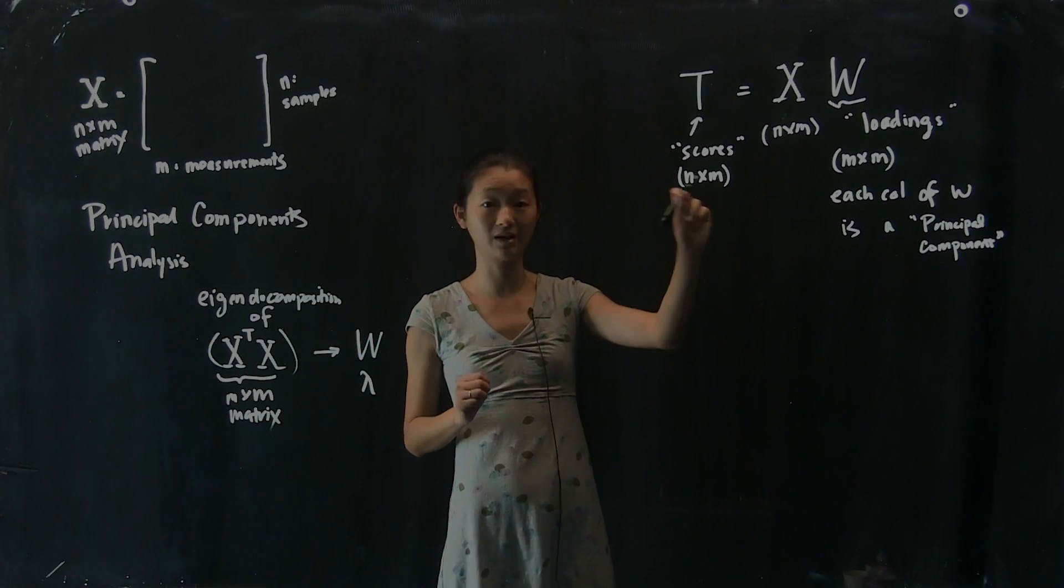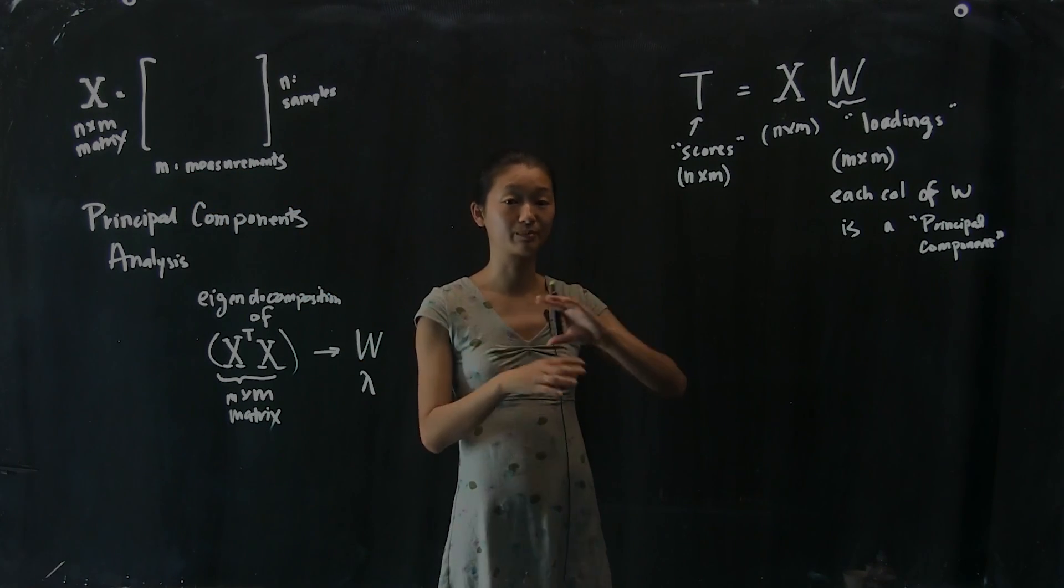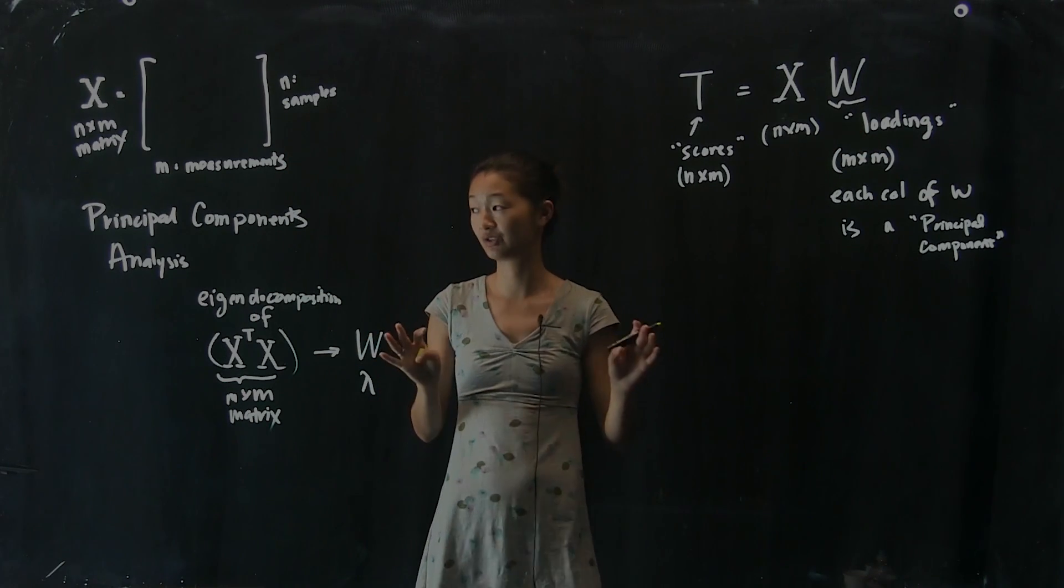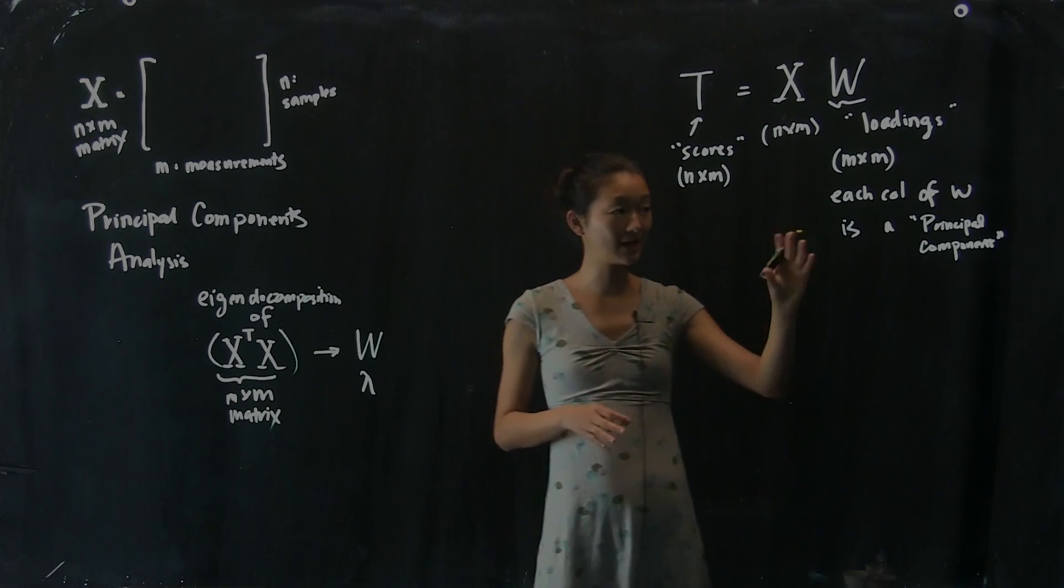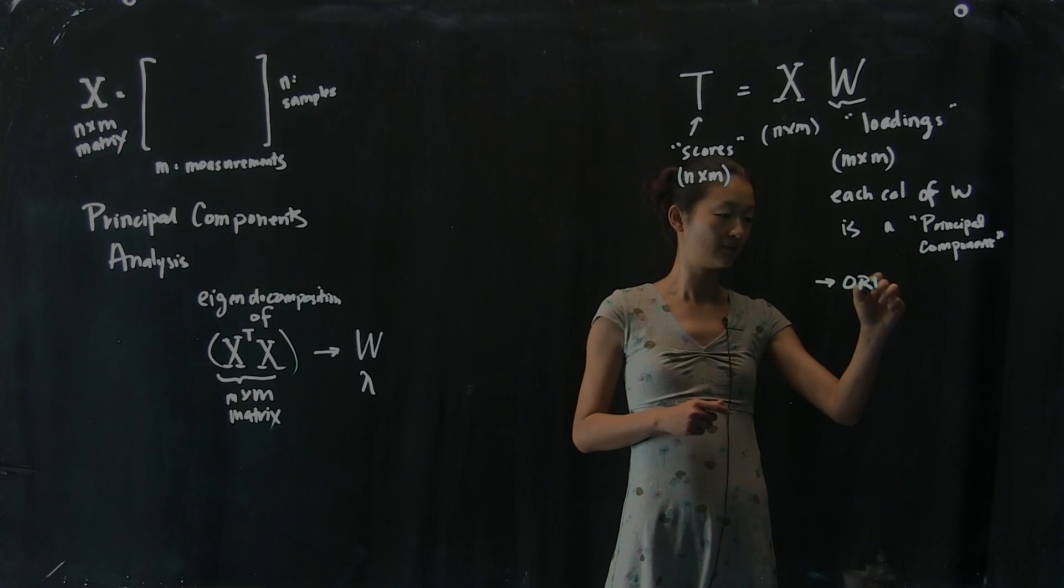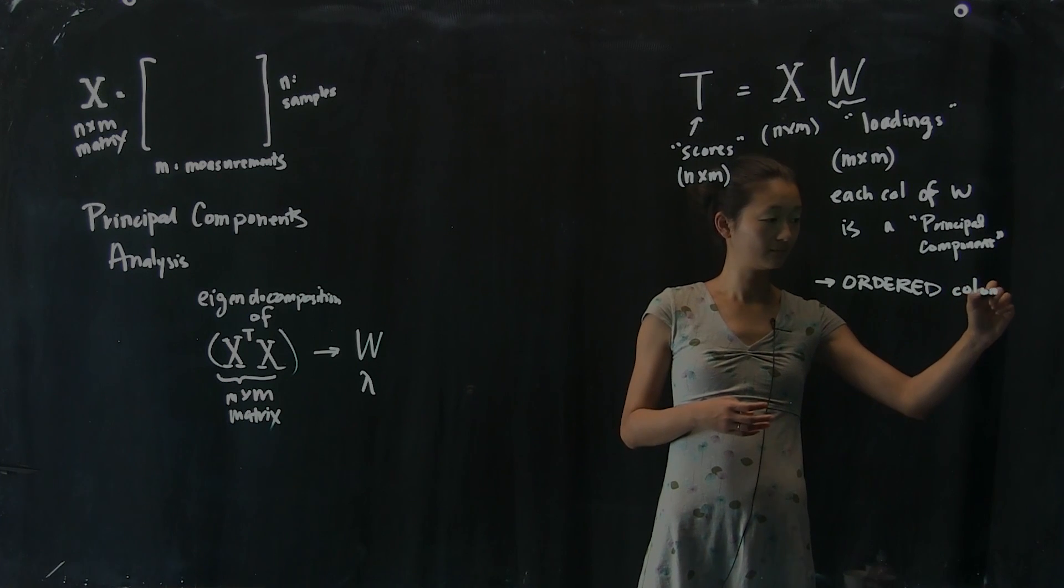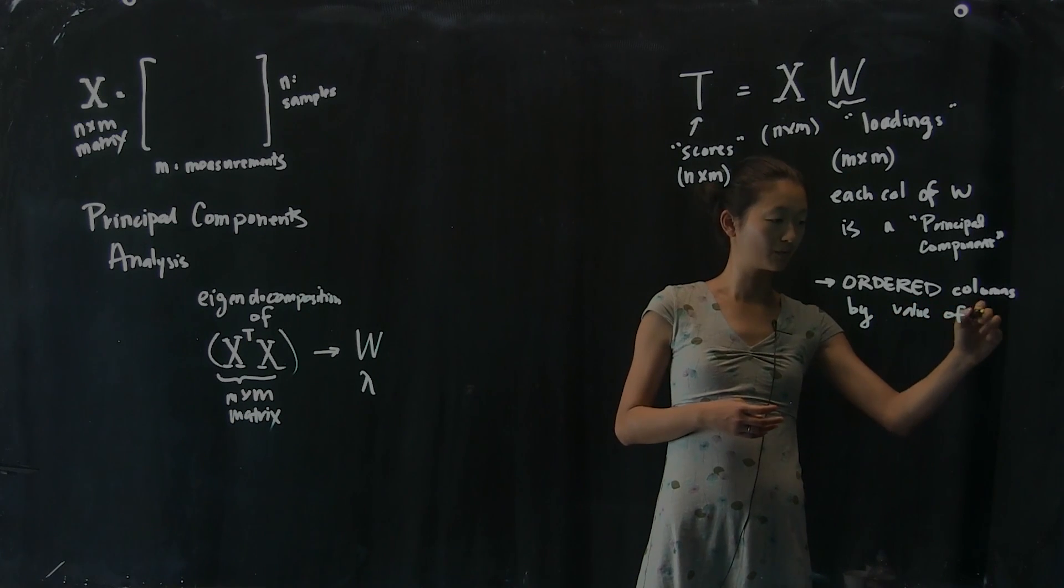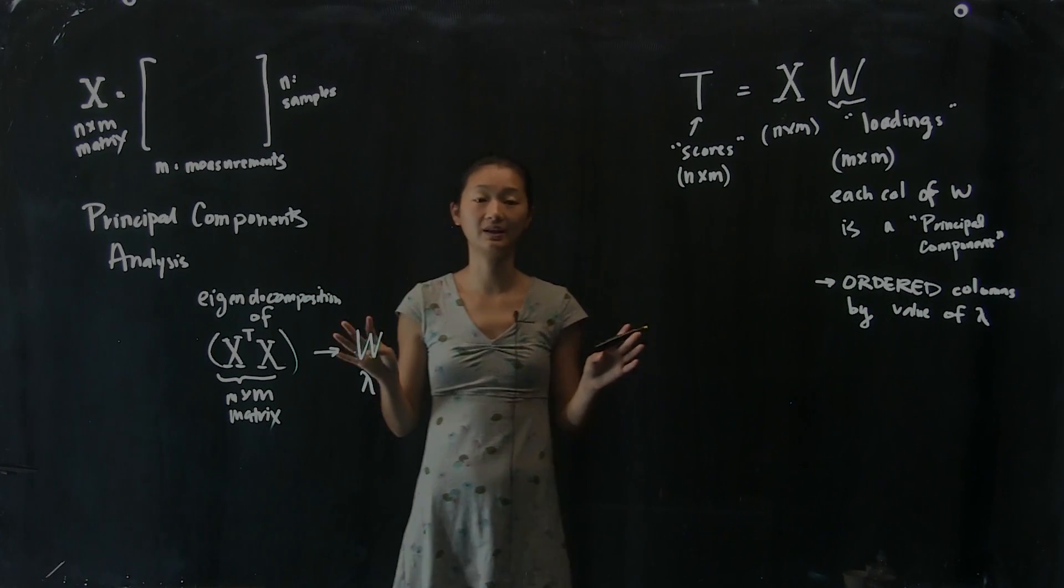If I started out with n samples, I still have n rows of the t matrix. It's just that instead of having m measurements, I now have the projection of all of those measurements in w space instead of in my measurement space, and that's all that has really changed. And so one of the really cool things about this way of representing it comes back to this idea that these principal components, these columns of w are ordered, and this is really important. So I'm going to write it down because it's something we need to remember. So these are ordered columns by the value of the corresponding lambdas, corresponding eigenvalues.